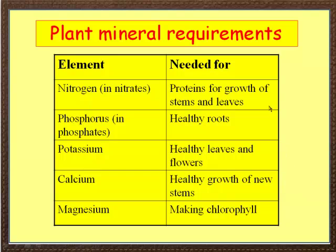What the farmer or gardener will do is look at their plants. If the roots are not as strong as they should be, they'd put in more phosphorus. Or if the leaves look poor or the stems are weak, they may put in more calcium. By altering the minerals you give to plants, you can affect their health.